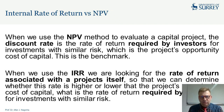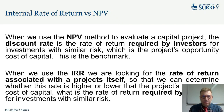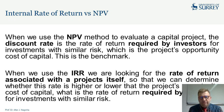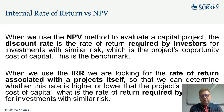When we use the NPV method to evaluate a capital project, the discount rate is the rate of return required by investors for investments with similar risk, which is the project's opportunity cost of capital. This is the benchmark. We calculated NPV assuming a certain rate of return. If this assumed rate was, say, 10%, and at this 10% the NPV was positive, we accepted the project.